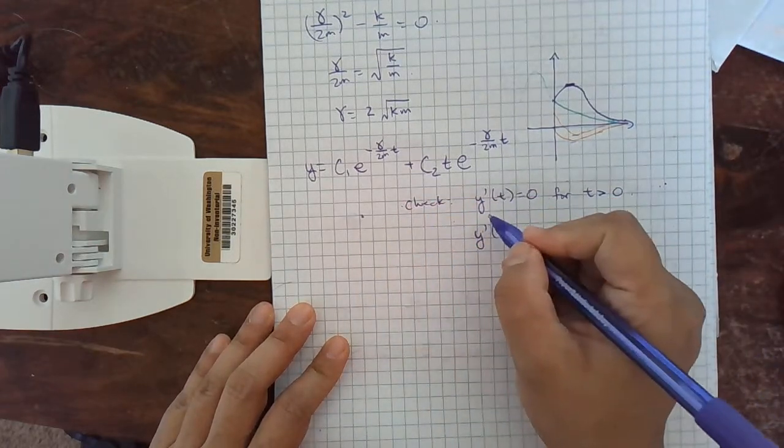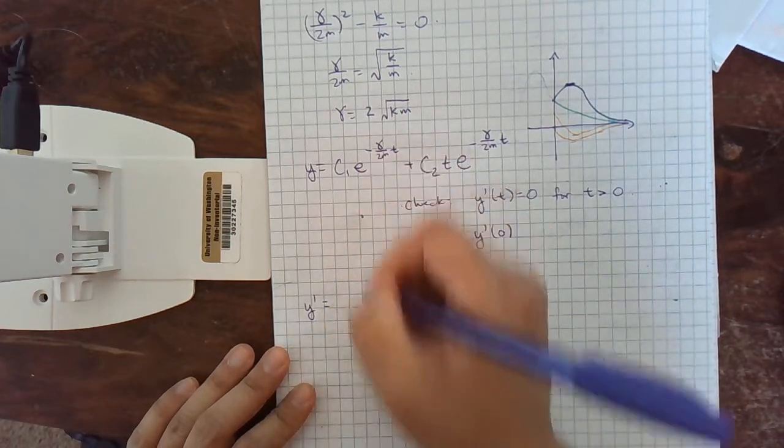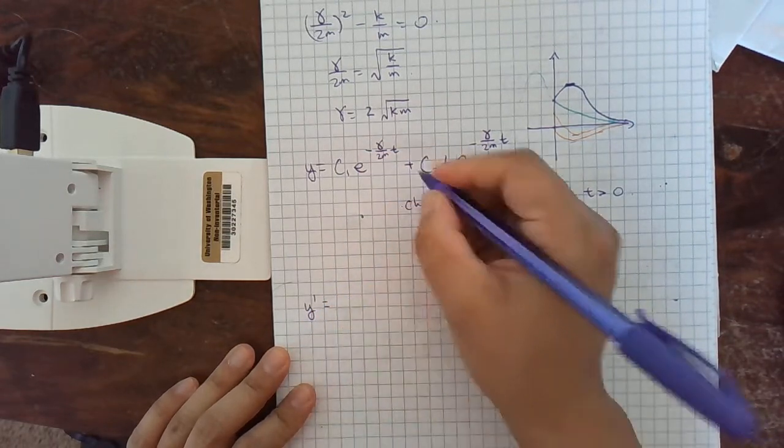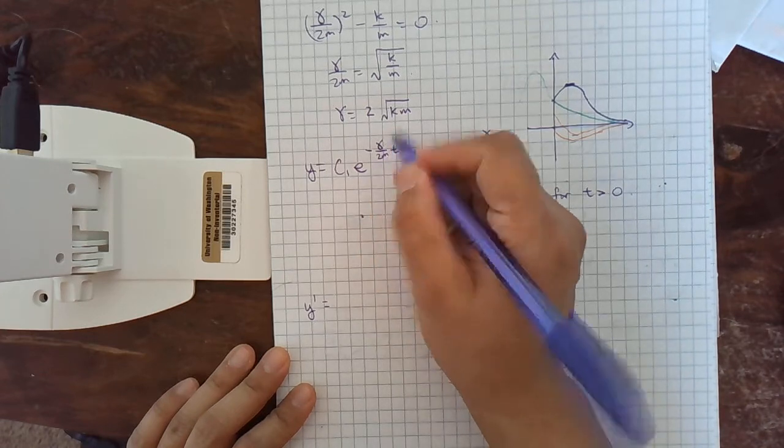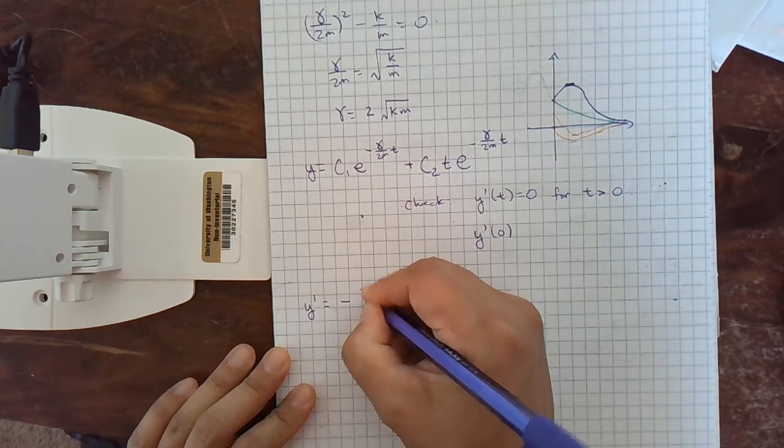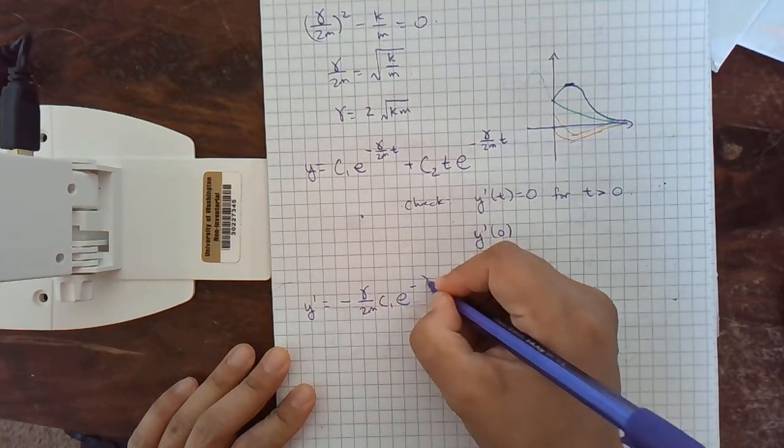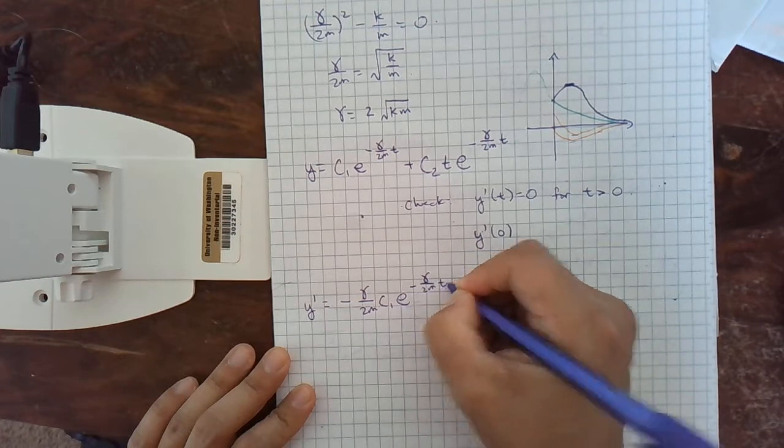Let's just look at what happens to y prime of t. So, y prime equals. We're going to take a derivative. It's going to be a little ugly. So, you get the chain rule. We have e to the same power. But then we have the derivative of the power. So, we get another gamma over 2m here. C1 e to the negative gamma over 2m t. And now we have a product rule.